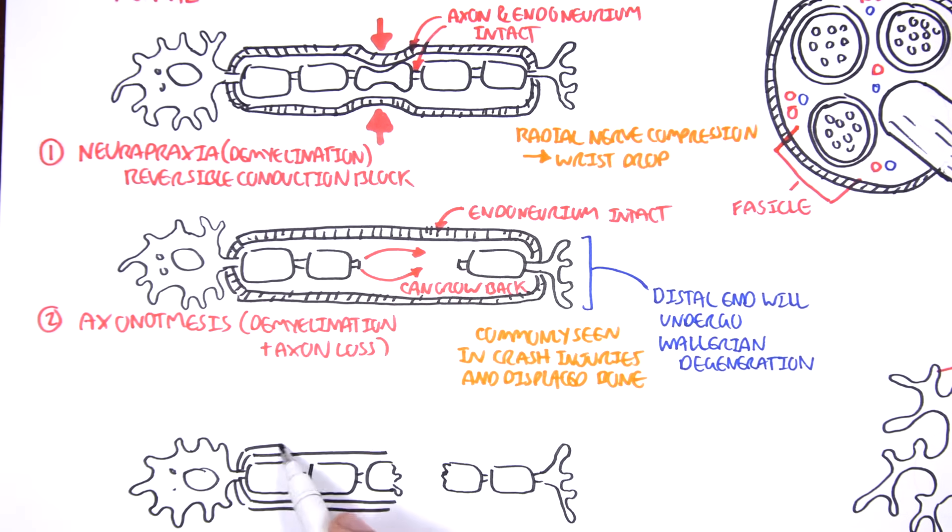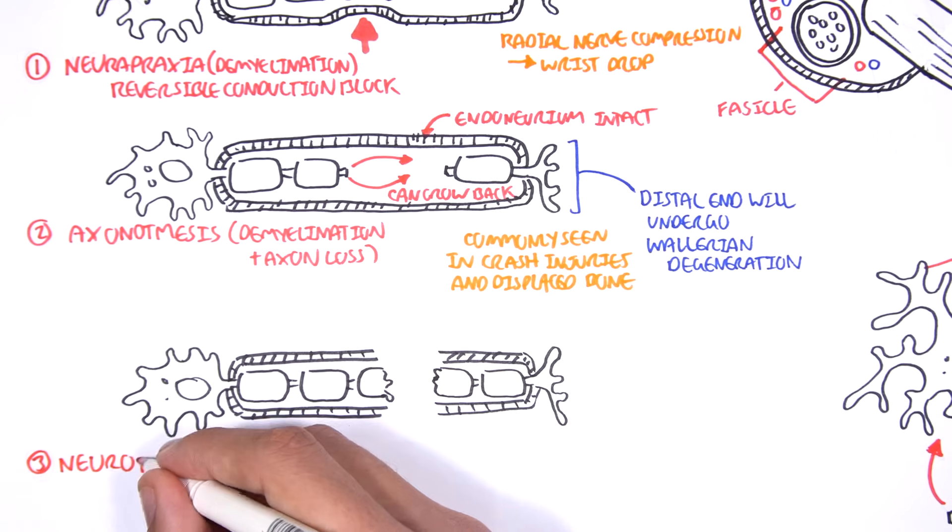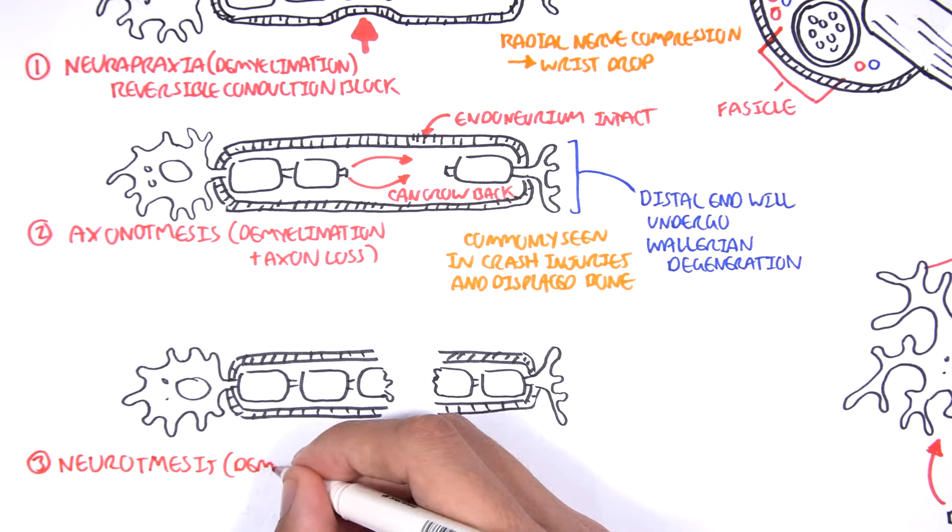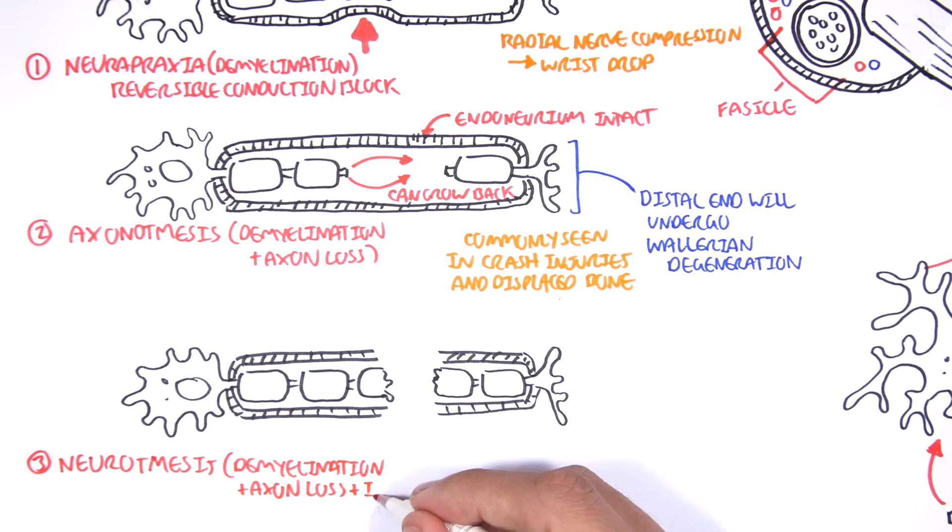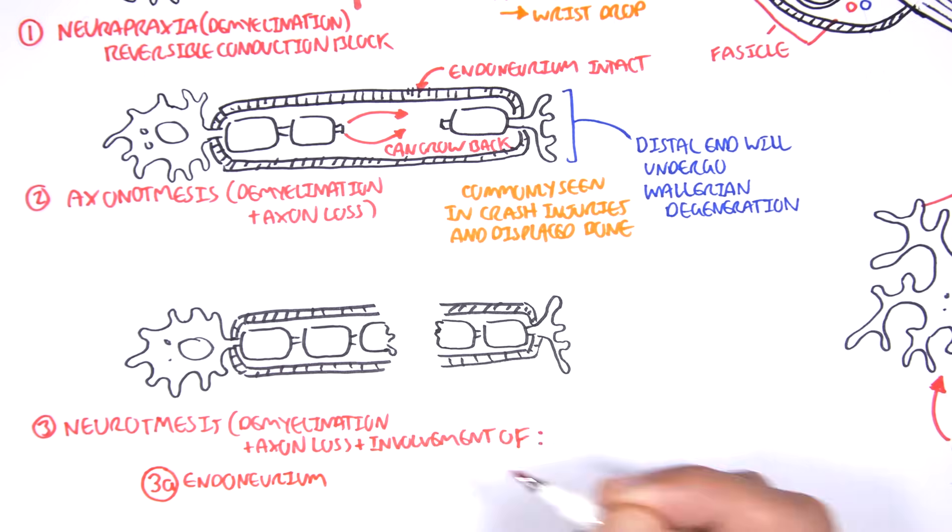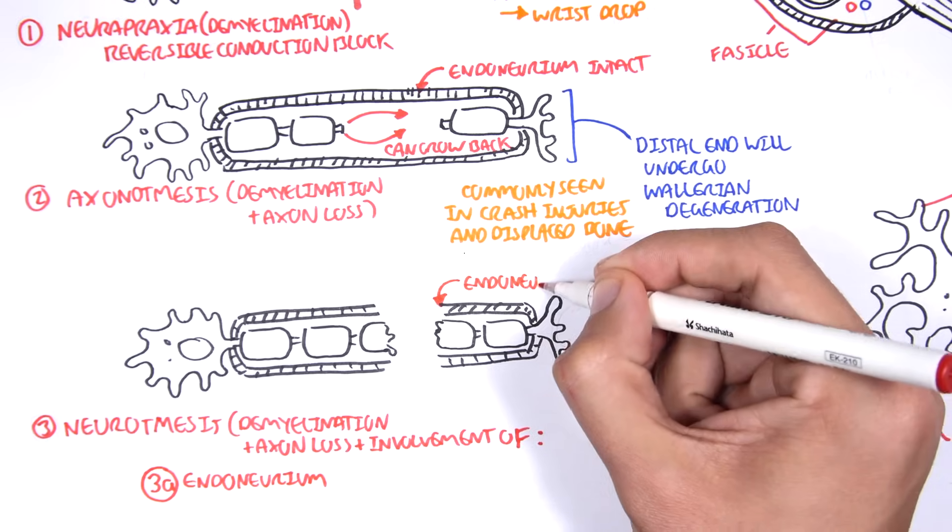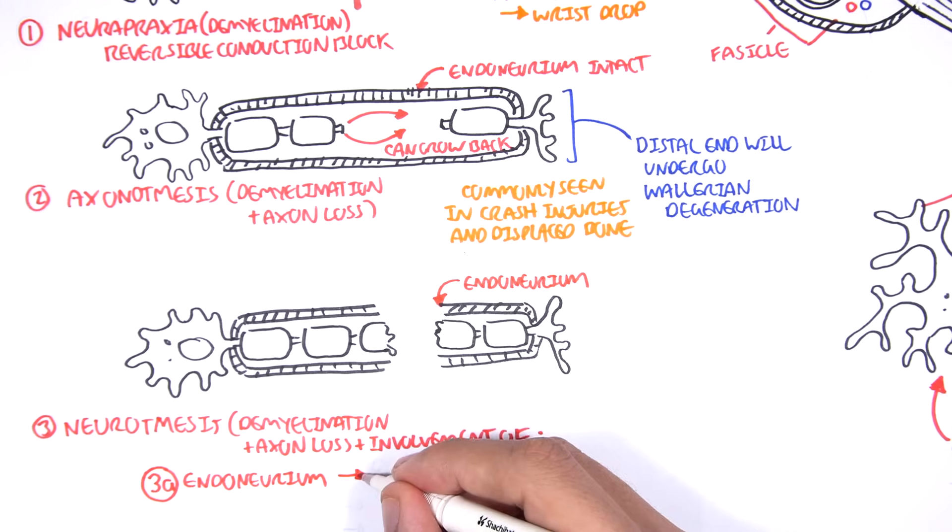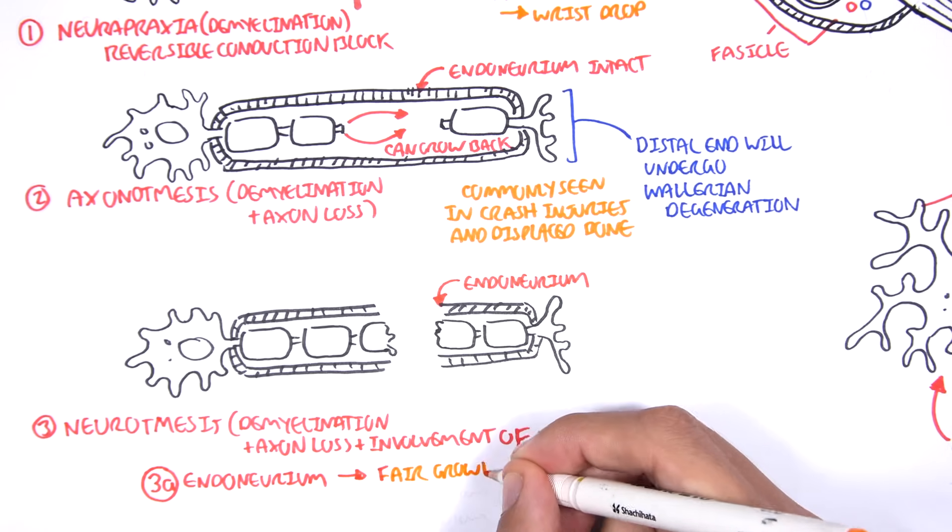The third type of nerve injury, which is the most severe, is called neurotmesis, which is essentially when you have demyelination plus axon loss, as well as one of the following. You can have either damage of the endoneurium, which I have just drawn here. And this means that you can have a fair growth, but not as well as if you would still have the endoneurium intact.